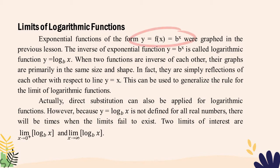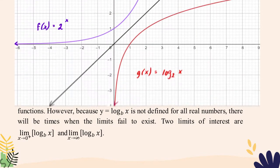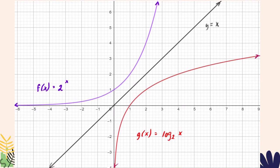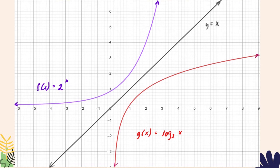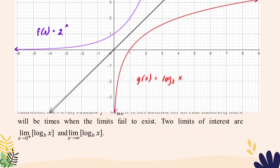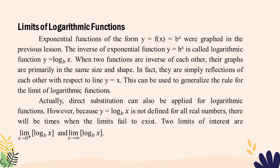Exponential functions of the form f(x) = b raised to x were graphed in the previous lesson. The inverse of the exponential function y = b raised to x is called the logarithmic function y = log base b of x. When two functions are inverses of each other, their graphs are primarily the same size and shape — they are simply reflections of each other with respect to the line y = x. This can be used to generalize the rule for the limit of logarithmic functions.